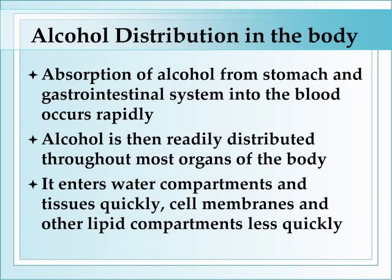The first consideration in regard to the effects of alcohol on the developing embryo and fetus is how alcohol is distributed within the body once it's consumed. Alcohol is a nearly universal solvent and can pass through both water compartments and lipid compartments very easily. It's also one of only two compounds that is rapidly absorbed directly from the stomach, so it is readily distributed throughout most areas of the body, enters water compartments and tissues very quickly, and passes through cell membranes somewhat less quickly but still much more rapidly than many other compounds.